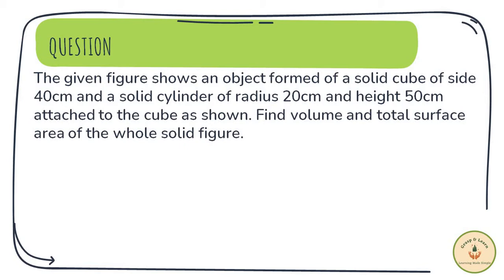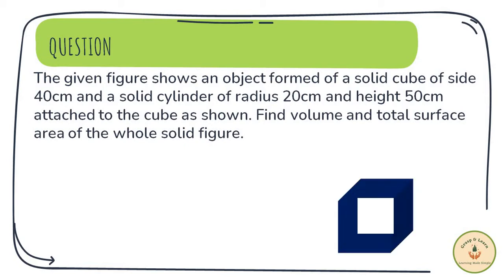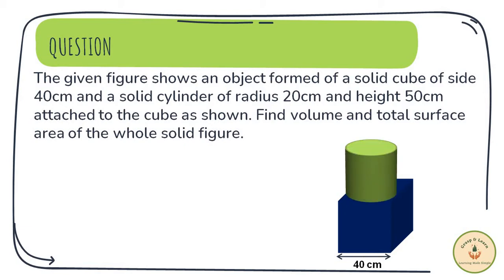As per the question, we have a solid cube whose side is 40 cm long. A cylinder is placed on this cube such that the base of the cylinder and one side of the cube overlap each other. The height of the cylinder is given as 50 cm and the radius of the cylinder is 20 cm. We need to calculate the volume and the total surface area of the complete solid figure.